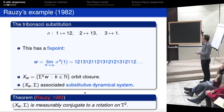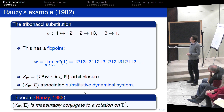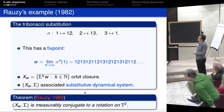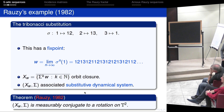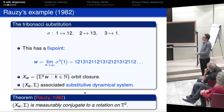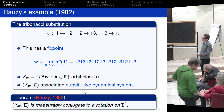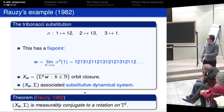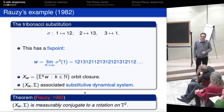Another example for a higher-dimensional or more-letter case goes back to 1982 and was done by Rauzy. He considered a single substitution — the set S has just one element — and iterated this single substitution on one letter, obtaining an infinite word. You can look at this orbit closure and define the associated substitutive dynamical system. What Rauzy proved is that in this particular case, this dynamical system is measurably conjugate to a rotation on the torus.